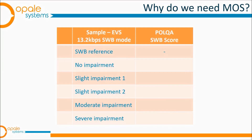To end this video, we're going to listen to a number of sample speech recordings starting with the clean reference material, then with the effects of increasing packet loss and jitter. In each case we'll see the MOS estimated by the POLQA metric.